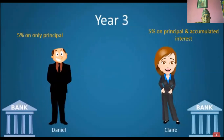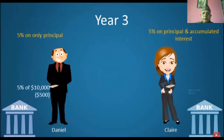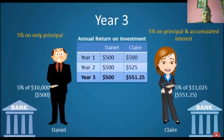In year 3, Daniel will make $500, or 5% of his principal investment of $10,000, with simple interest, bringing his total capital to $11,500. Claire, on the other hand, will make interest on $11,025 in year 3 for an annual return of $551.25, bringing her total capital to $11,576.25. So after only 2 years, Claire has made $76.25 more than Daniel, all due to compound interest.